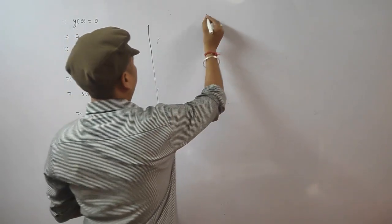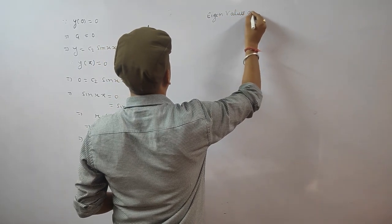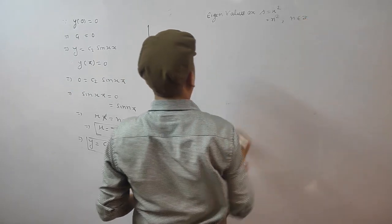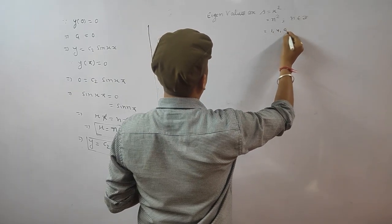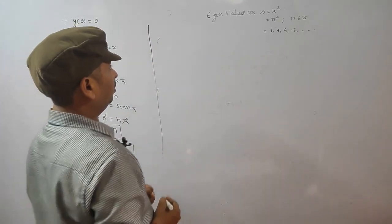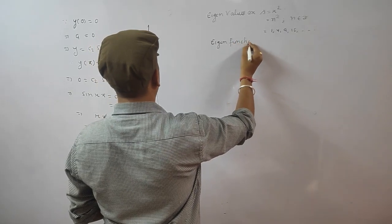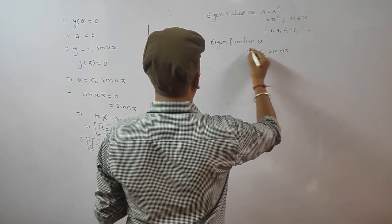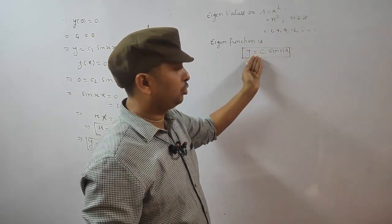The eigenvalues are λ = μ² = n², where n is an integer. So the eigenvalues are 1, 4, 9, 16, ... and the corresponding eigenfunction is y = c·sin(nx). Whatever n value you choose, substitute it to get the corresponding eigenfunction.